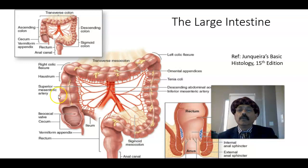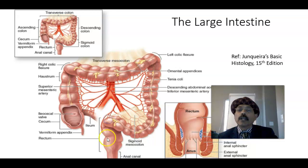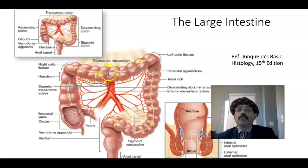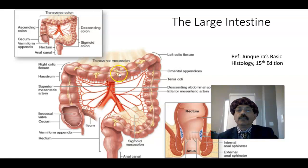The large intestine includes the cecum, the vermiform appendix, ascending colon, the transverse colon, the descending colon, sigmoid colon, the rectum and the anal canal. The large intestine has taenia coli outside. These are bands of longitudinal muscle layer. We have three taenia coli — we are seeing this one here, the other side has two more. We also have the appendices epiploicae, that is the pocket of fatty tissue on the outer surface of the large intestine.